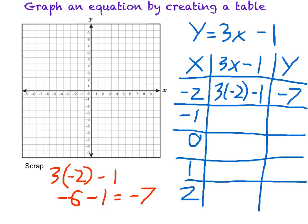I'm going to repeat this process for each value of x. So next I could calculate 3 times negative 1 minus 1. That's going to be negative 3. 3 times negative 1 is negative 3. 3 minus 1 is negative 4.